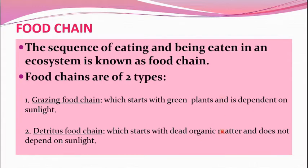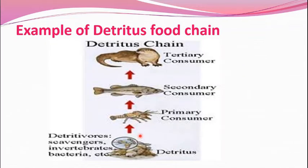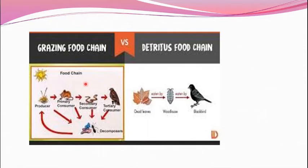The end point of these two food chains is similar, but the starting is different. When it starts with a green plant, it depends on sunlight. When it starts with dead organic matter, it does not depend on sunlight. The grazing food chain goes from producers to primary consumers to secondary consumers to tertiary consumers, after whose death they are decomposed. In the detritus food chain, detritus is consumed by detritivores, then primary, secondary, and tertiary consumers.